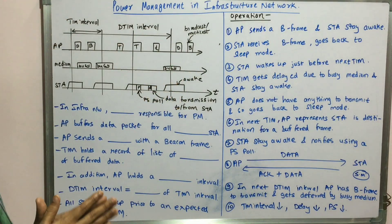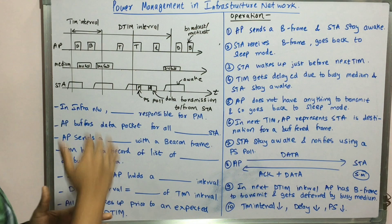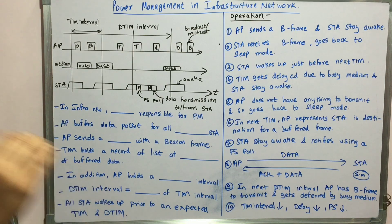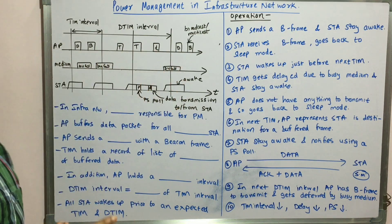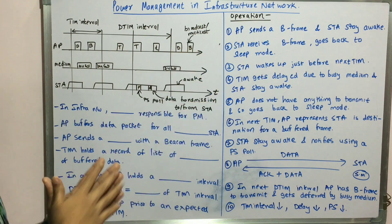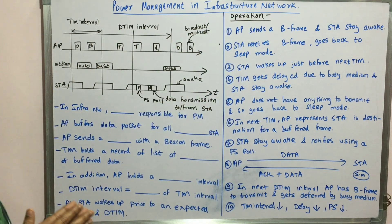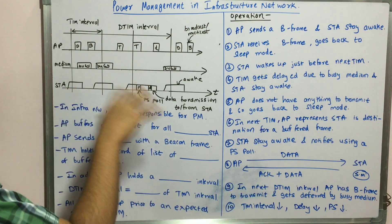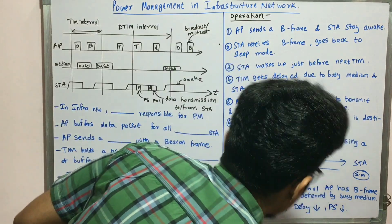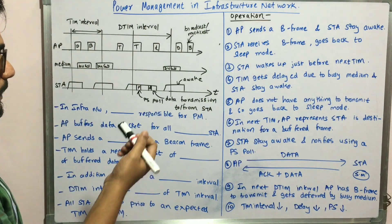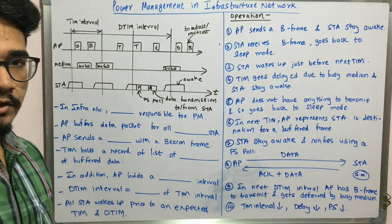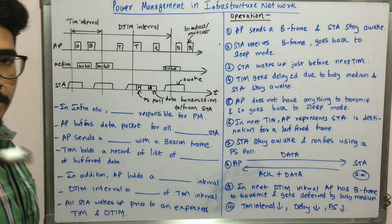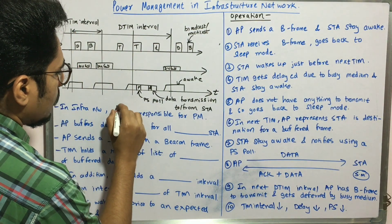We have this diagram with three entities. Since it's an infrastructure network, we have the access point, the medium, and the station. As a quick recap from the last video on power management, in the infrastructure network, the access point is responsible for power management — just like some entity was responsible for synchronization, it remains the same here.